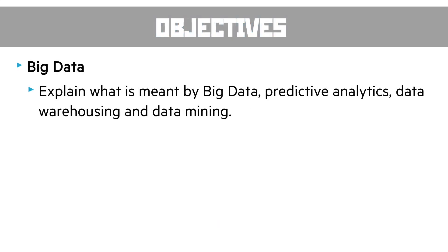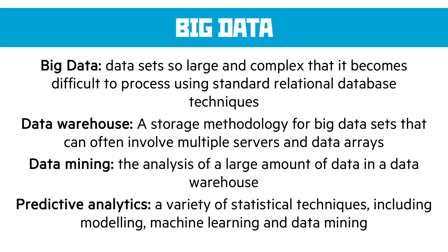Big data is a really exciting thing — it's where data becomes so large and complex that it's difficult to process using standard techniques. For instance, all the information about every click you've ever made on Amazon — that's big data, gigabytes per person across millions of users, so huge it can't be stored or manipulated in the normal way. A data warehouse is a storage technology allowing us to store big data sets, usually using multiple servers and data arrays. Data mining is the process where we analyze large amounts of data. Predictive analysis is where we use that data to model or machine-learn from it — and you can't really do machine learning without big data.